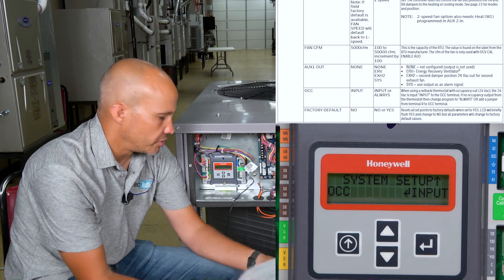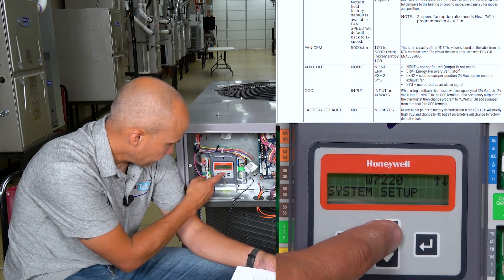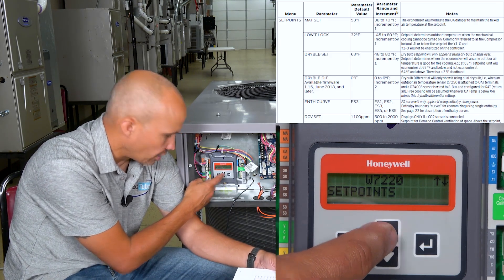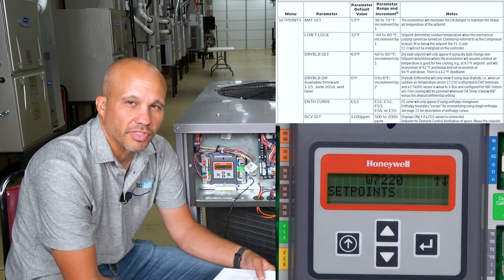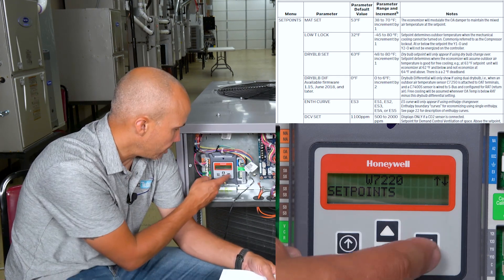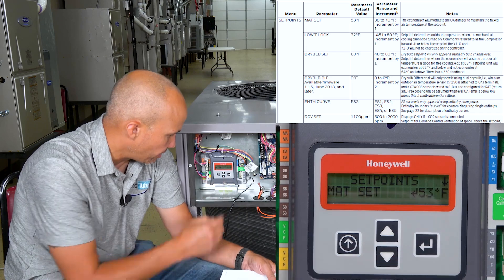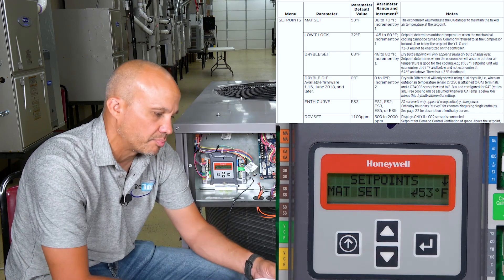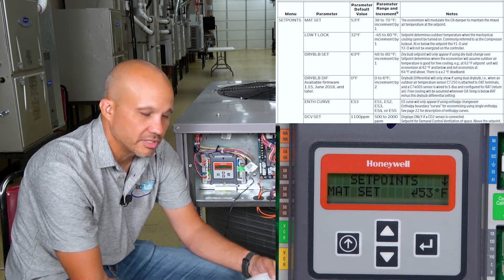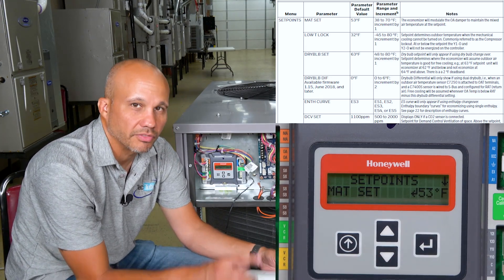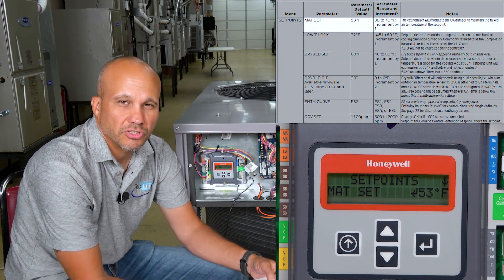We're going to Escape back out of here and scroll up to Set Points. Now that we've configured the different system settings, we're going to go do all of our settings related to those things. Hitting Enter, I'm now in the Set Points screen. The first one is Mixed Air Temperature Set Point.